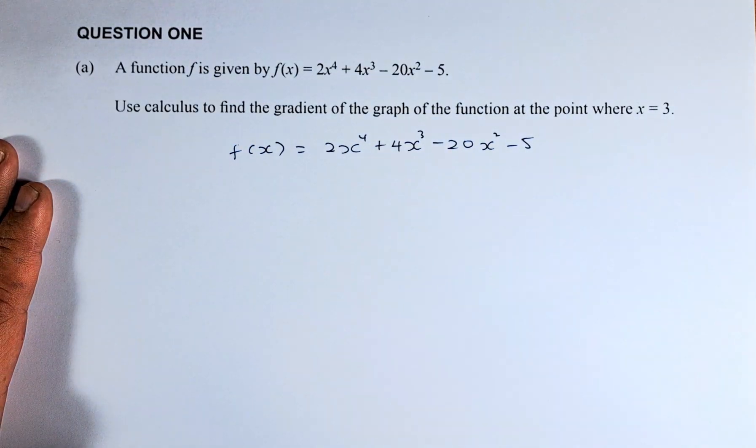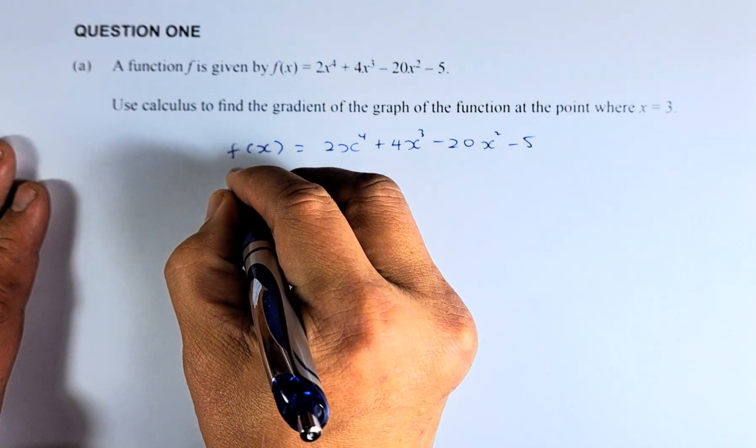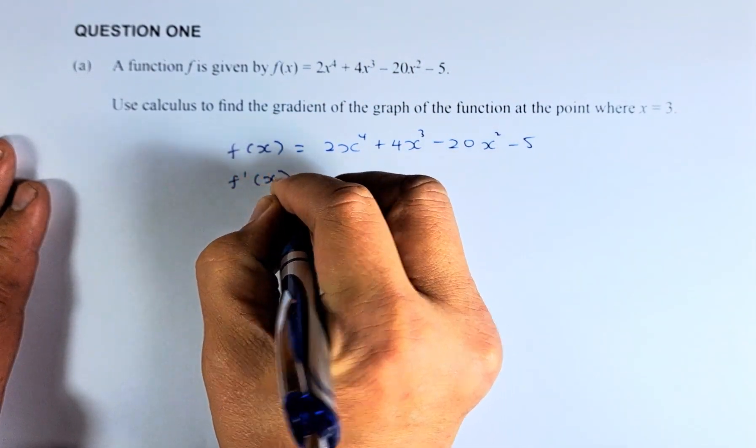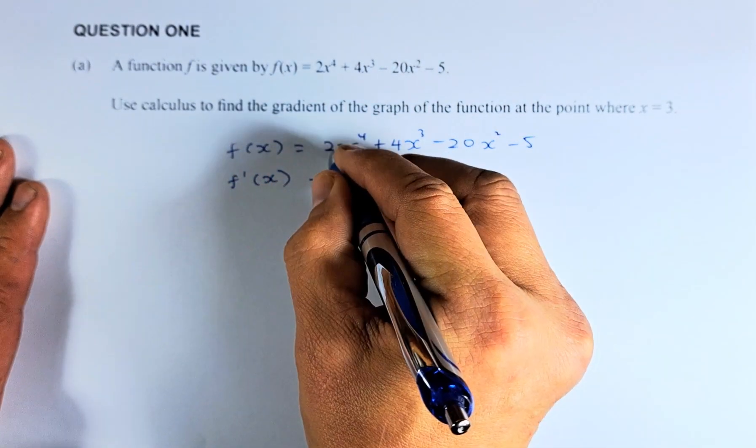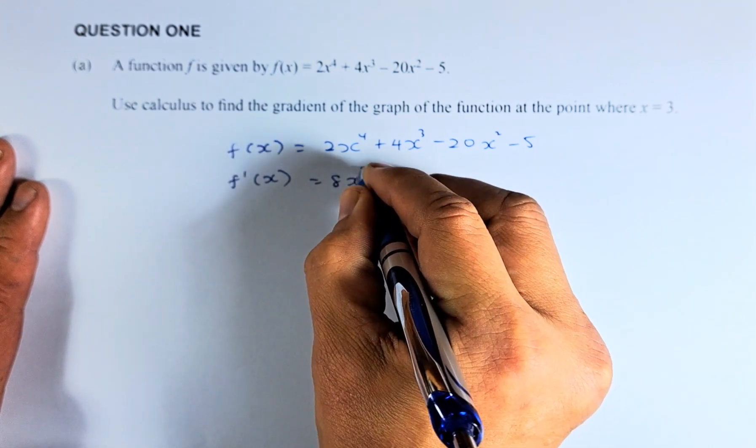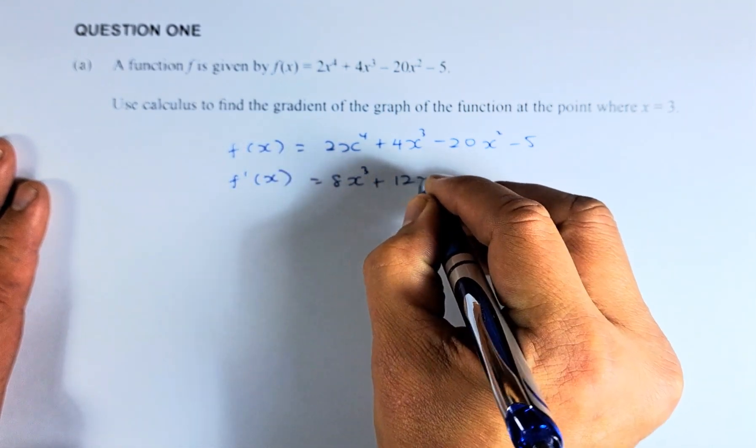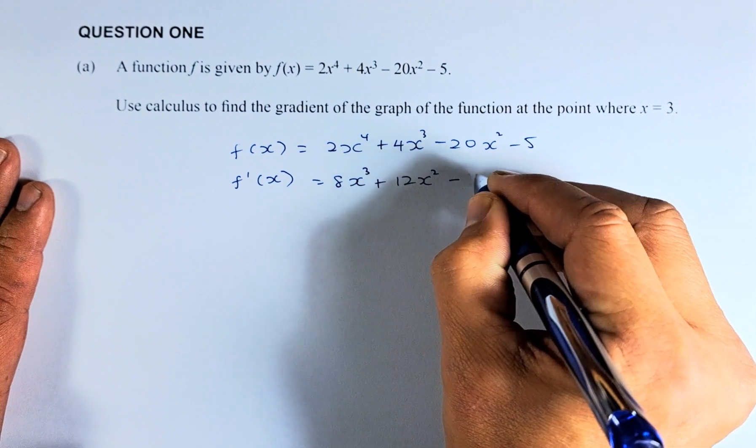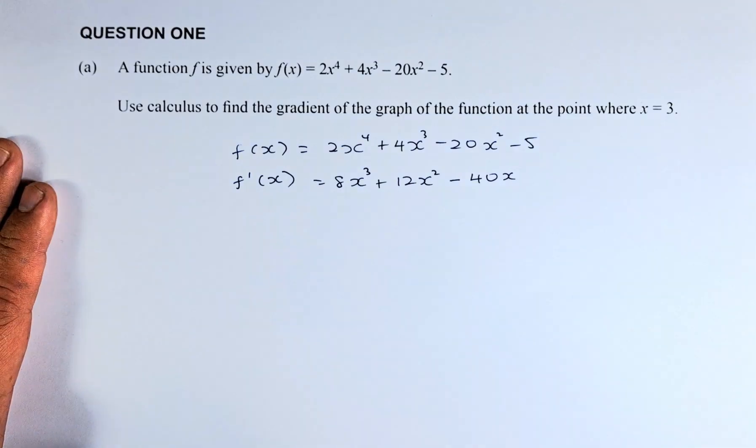To get the gradient, we need to differentiate. So represent the differentiate by f'(x). So when you differentiate, 4 comes down and becomes 8x cubed plus 12x squared minus 40x. And that's the answer.